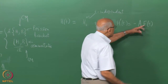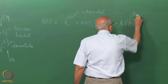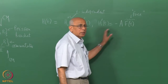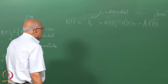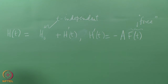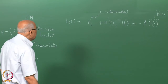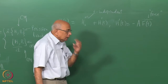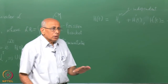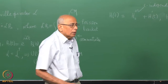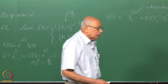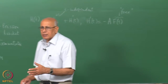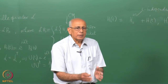H-prime of t has the form minus A times f(t), where f(t) is some generalised force and A is the operator pertaining to the system to which this force couples. That is the form of the perturbation, and we would now like to find physical averages of any arbitrary quantity in the presence of this time-dependent perturbation.